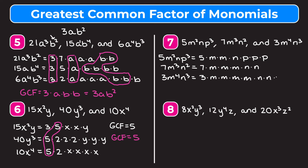They don't have any number in common. For m's they have two in common; for n's they only have one in common; p doesn't appear in the last two terms so it's not in our answer. The greatest common factor is m times m times n, which is m squared times n. Using the shortcut: GCF of 5, 7, and 3 is 1; m's lowest exponent is 2; n's lowest exponent is 1; p doesn't show up in every term, so we get m squared n.